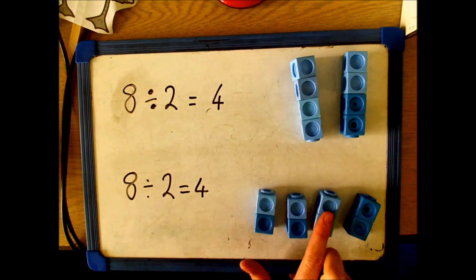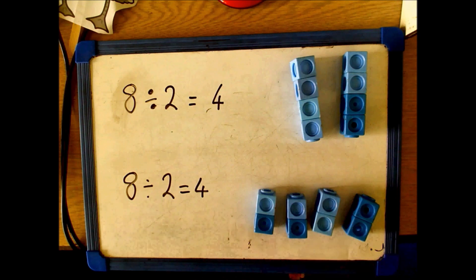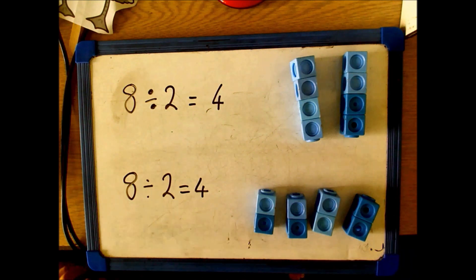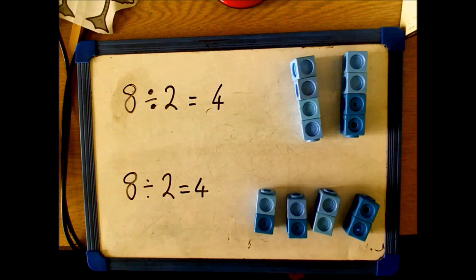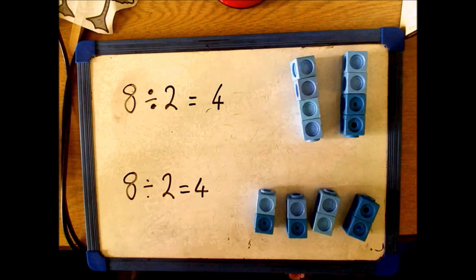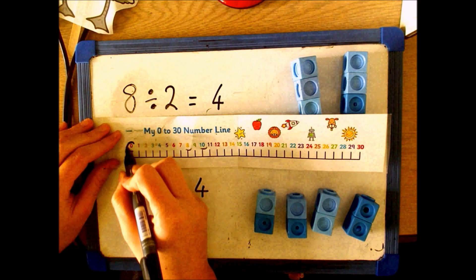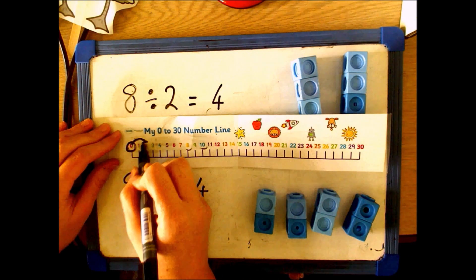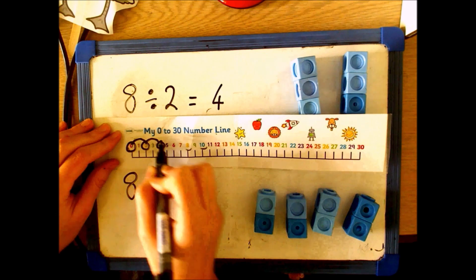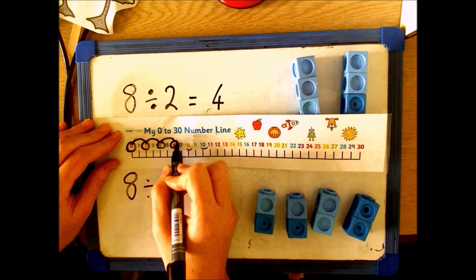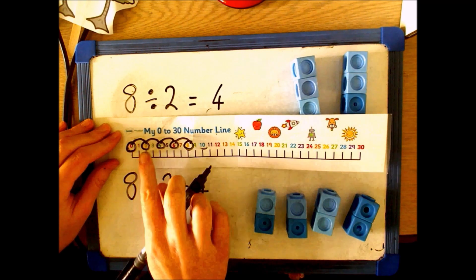We could also use the number line to represent this. We count in groups of 2 until we get to 8: 2, 4, 6, 8.